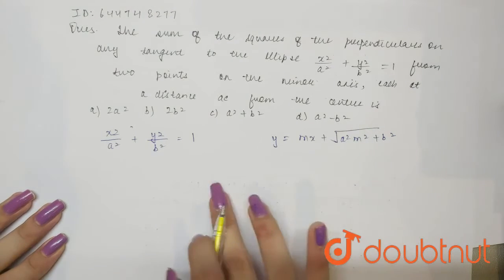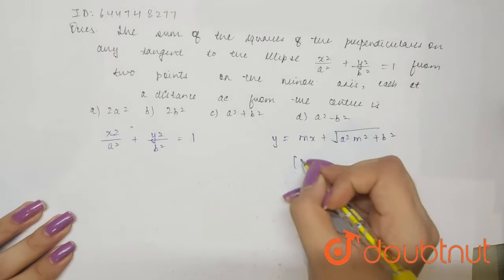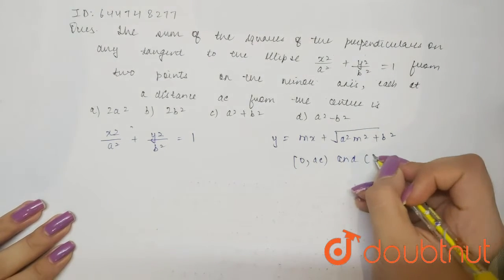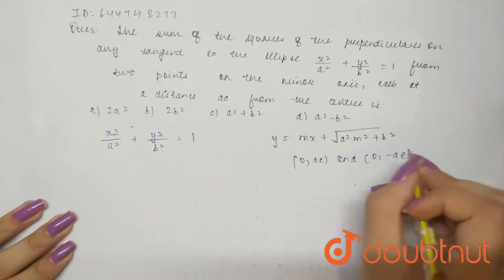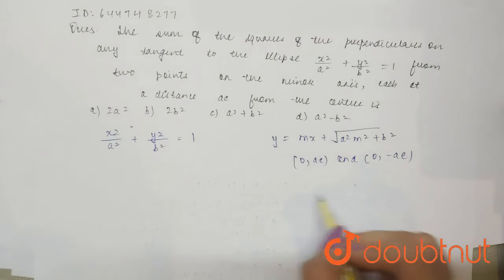Now we know that on the minor axis we are always having two foci. So the two points are basically 0, ae and we are having 0, minus ae.